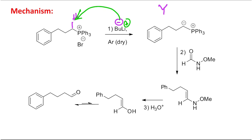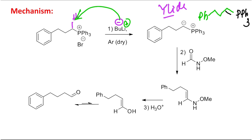That's why this is called a ylide. In some places you can see this structure written with a double bond between carbon and triphenylphosphine and no charge — both representations are correct. However, the negative charge representation explains more about the nucleophilic character of the ylide, which is why I have shown it that way here.